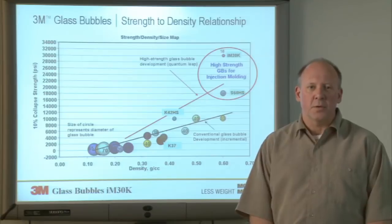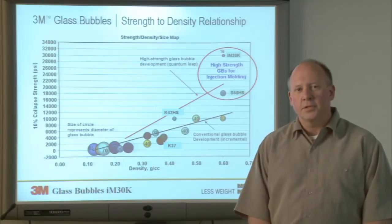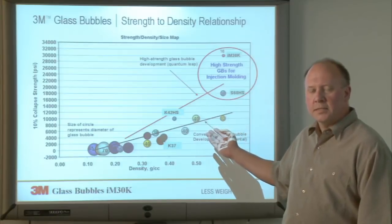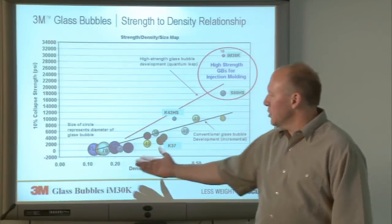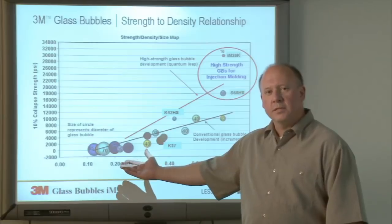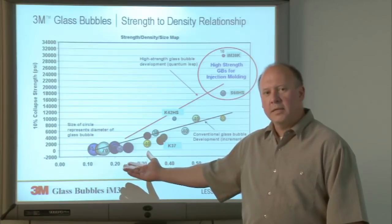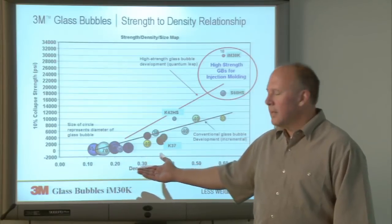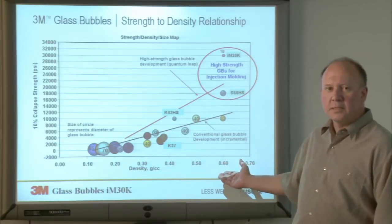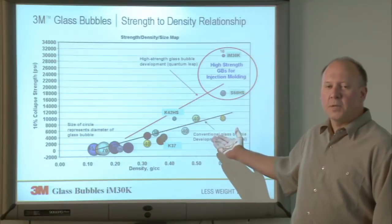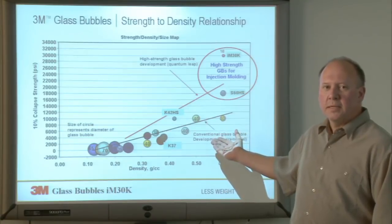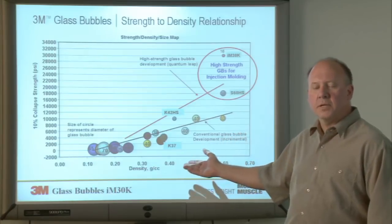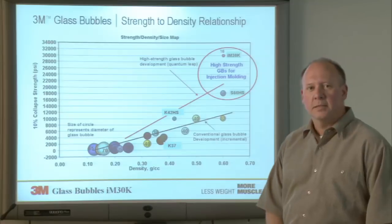There are two trend lines on this graph. The black trend line shows our traditional glass bubble response to strength versus density. We have large particles at very low density — 0.125 grams per cc and 70 microns — that have an average strength of 250 to 500 psi. Then we go up to 0.6 grams per cc, which is a 30 micron average particle size with a strength of 10,000 psi. That's our older, common series of products — the black trend line.